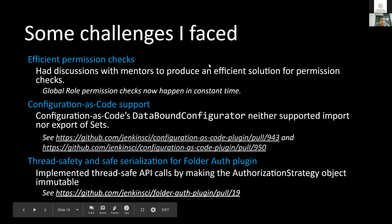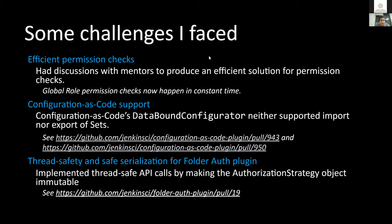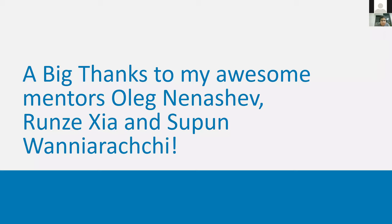Some of the challenges I faced included having efficient permission checks, which took a lot of time — my mentors really helped here. Global role permission checks now happen in constant time, O(1). Another challenge was Configuration as Code support, as the DataBoundConfigurator in the CasC plugin did not support import or export of sets, which required a couple of pull requests. Finally, thread safety and safe serialization for the Folder Authorization plugin was a challenge, which we solved by making the authorization strategy object immutable.